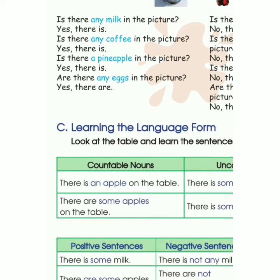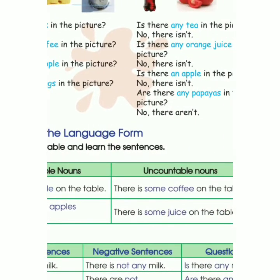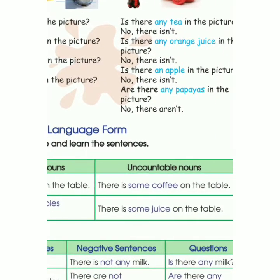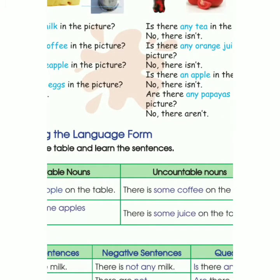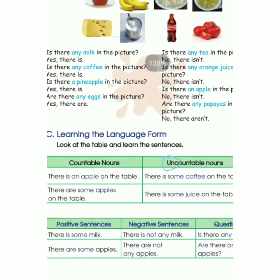Countable noun adalah benda yang dapat dihitung, sedangkan uncountable nouns adalah benda yang tidak dapat dihitung. Cara membedakannya: dapat dihitung — countable; tidak dapat dihitung — menggunakan 'a' atau 'an'. Nah, a/an inilah poin utamanya.